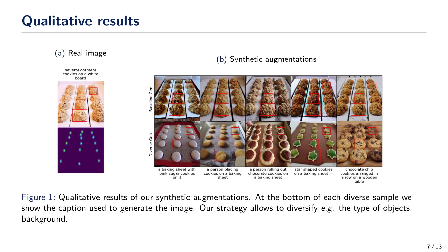We first present some qualitative results. We found that the baseline strategy leads to images that do not deviate too much from the initial images. On the other hand, our diverse strategy allows diversifying the type, shape, and size of objects, as well as the background.